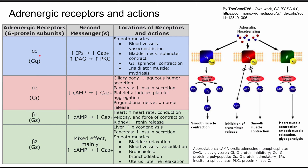Let's start with alpha-1. Alpha-1 goes through a G-protein Q-polypeptide. The second messengers of interest here are inositol-3-phosphate and DAG, diacylglycerol. Inositol-3-phosphate results in increased calcium ion concentration, and DAG results in increased protein kinase C.